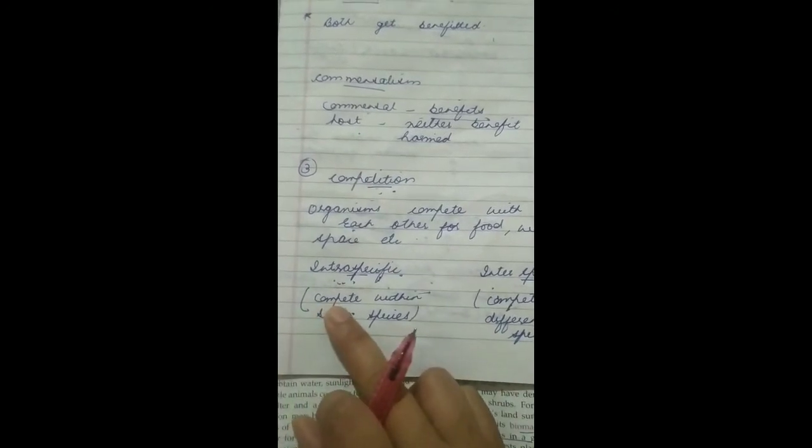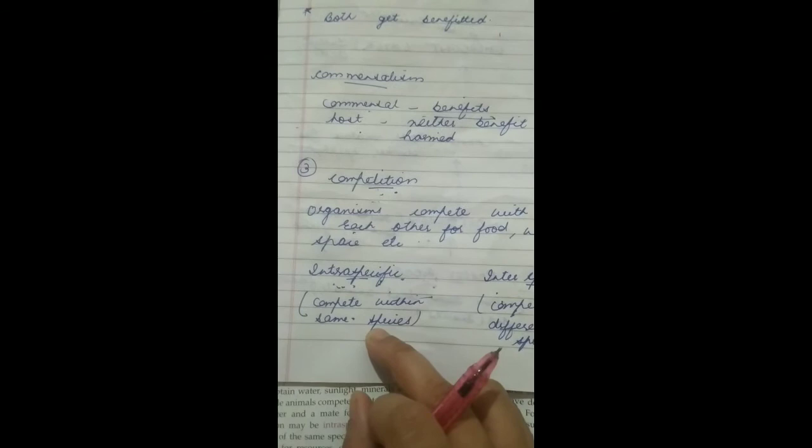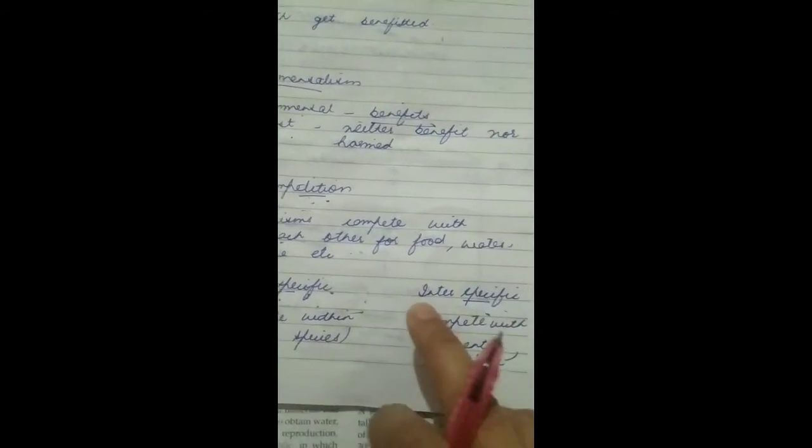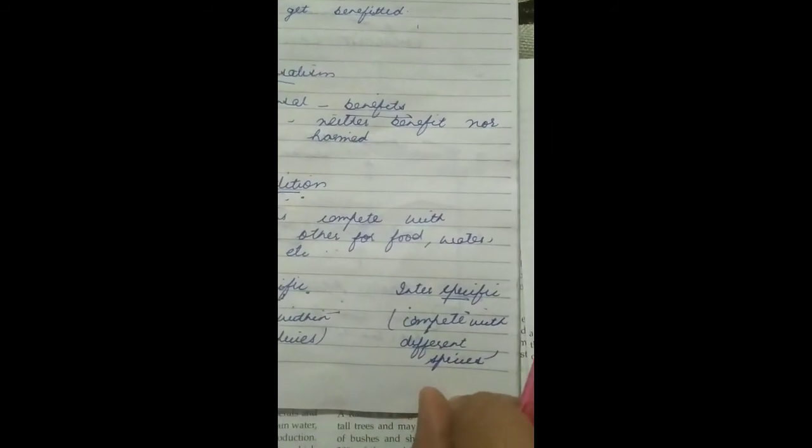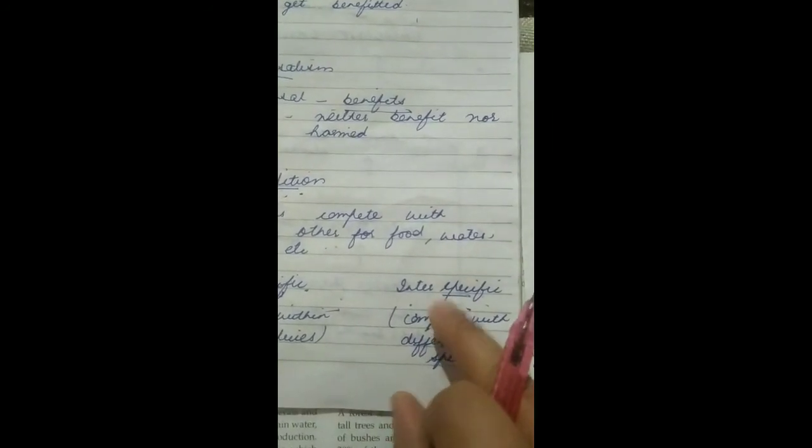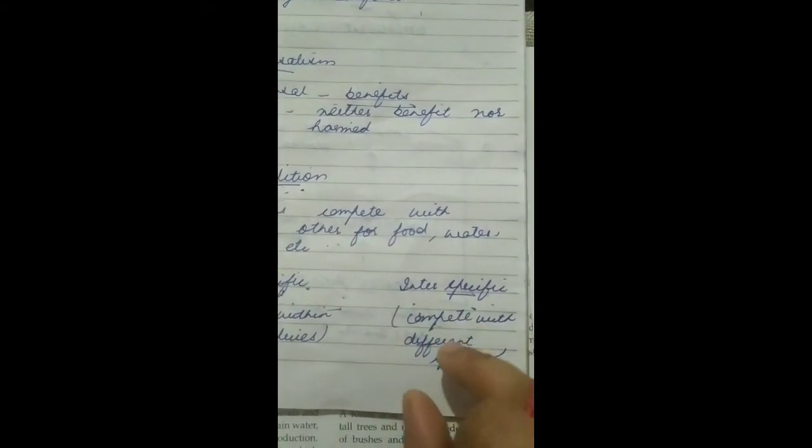Intraspecific means when two organisms compete within the same species. For example, lion and lion compete with each other for food. Interspecific means they compete with different species. For example, lion is competed with wolf or some other carnivorous animals of different species.